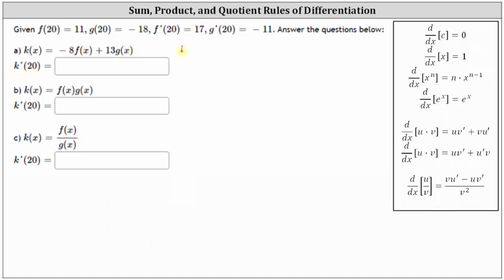k prime of x is equal to the derivative of negative eight f of x, which is equal to negative eight times f prime of x, and then plus the derivative of 13 g of x, which is equal to 13 times g prime of x. And therefore, k prime of 20 is equal to negative eight times f prime of 20 plus 13 times g prime of 20.